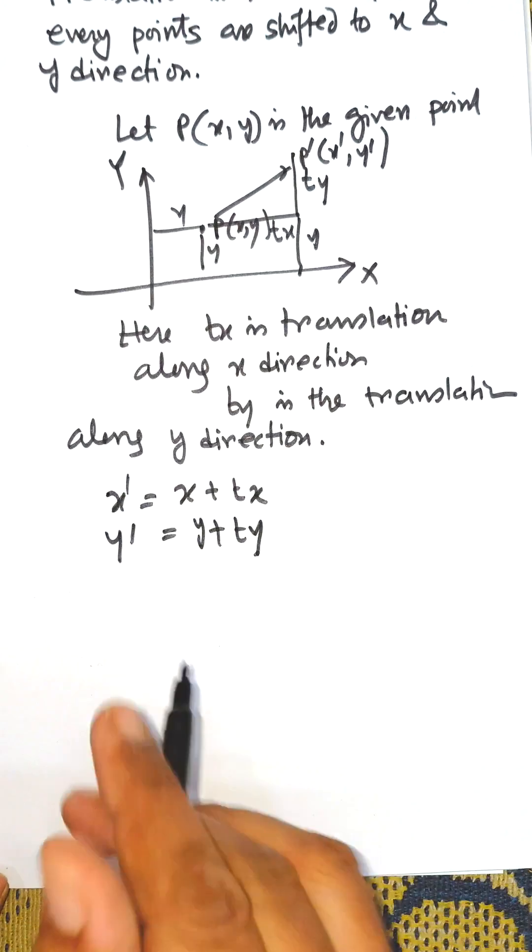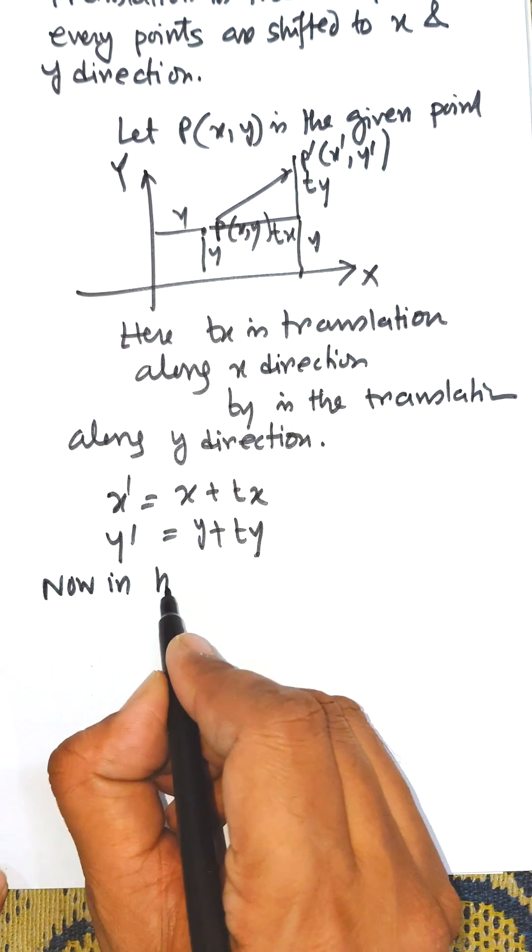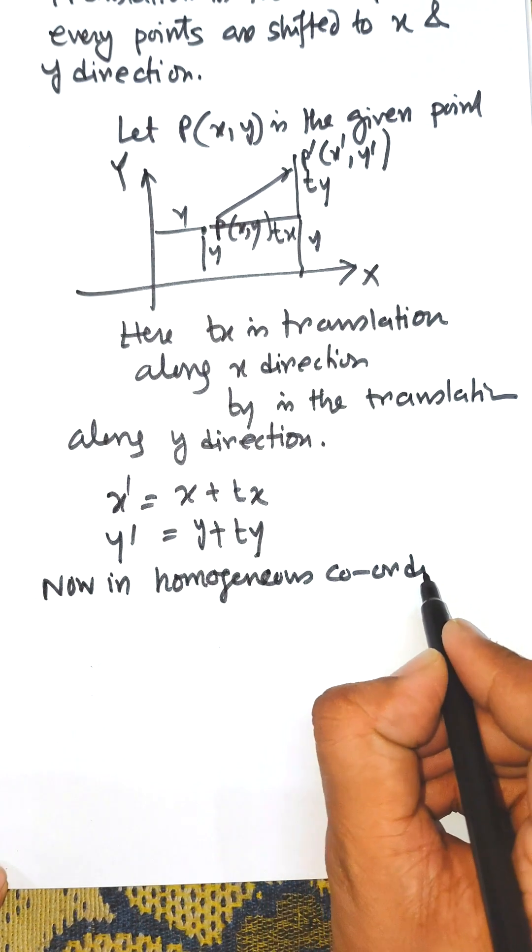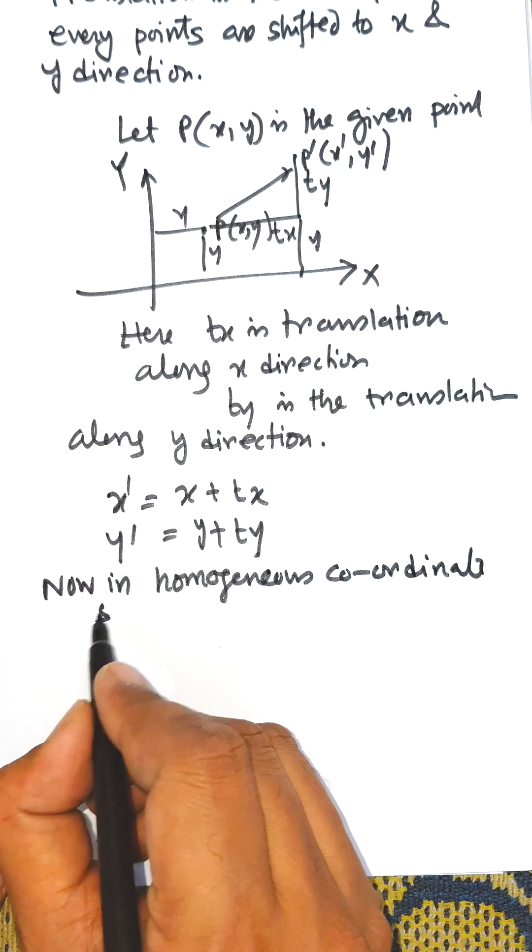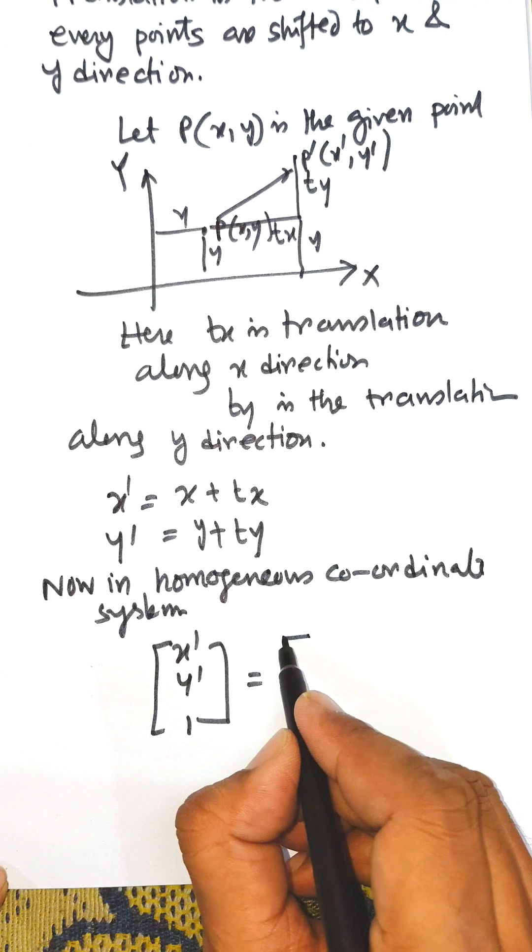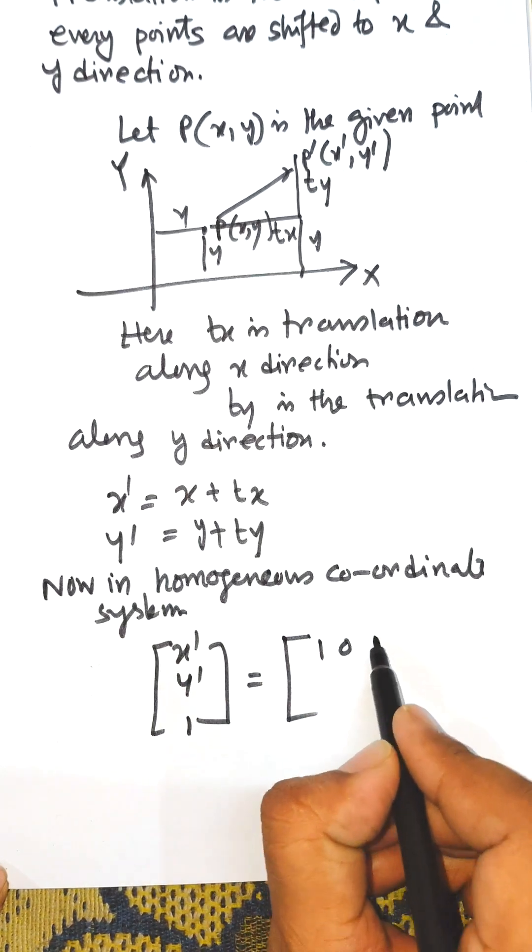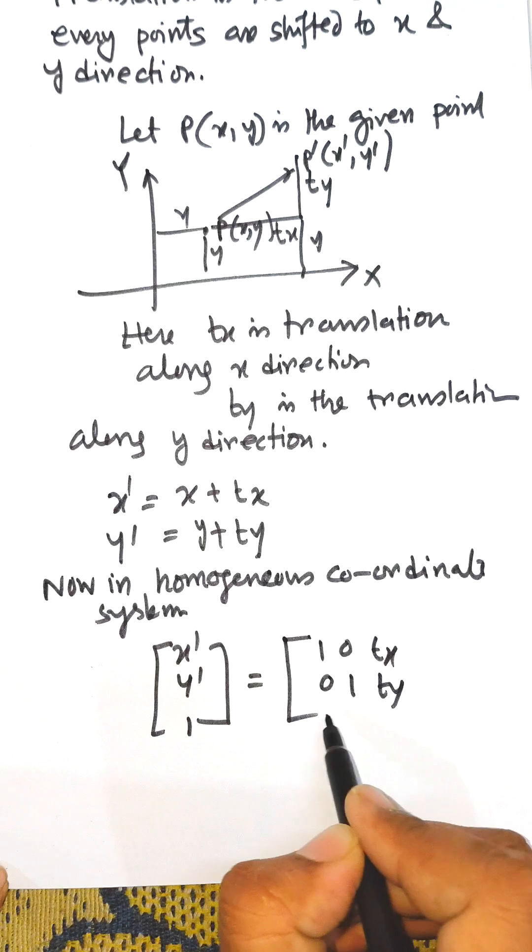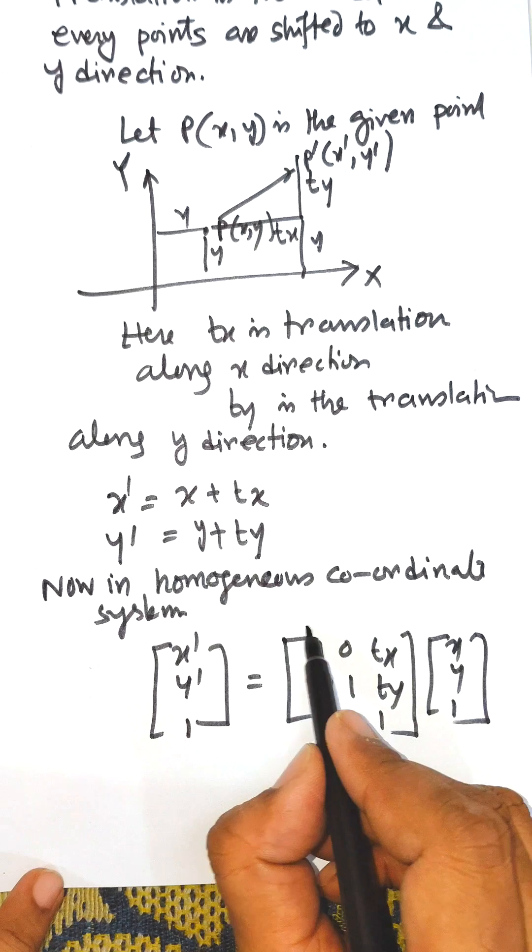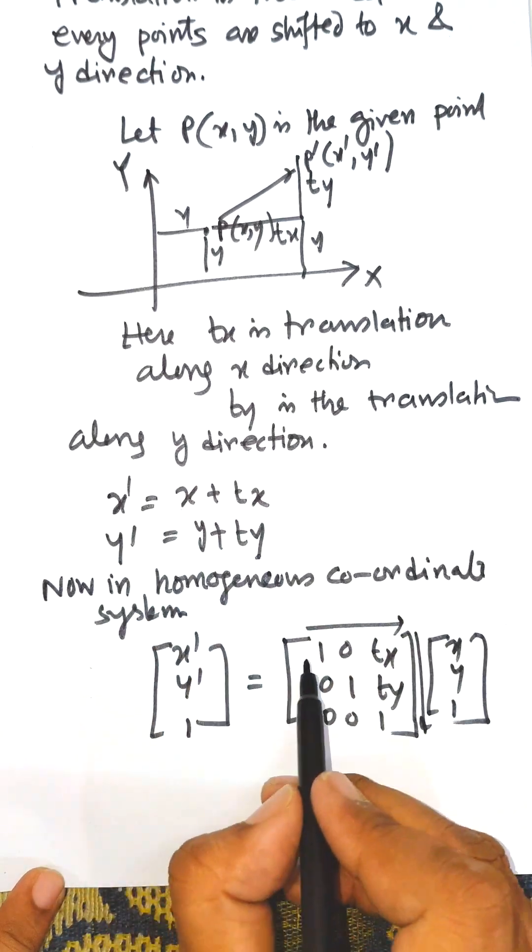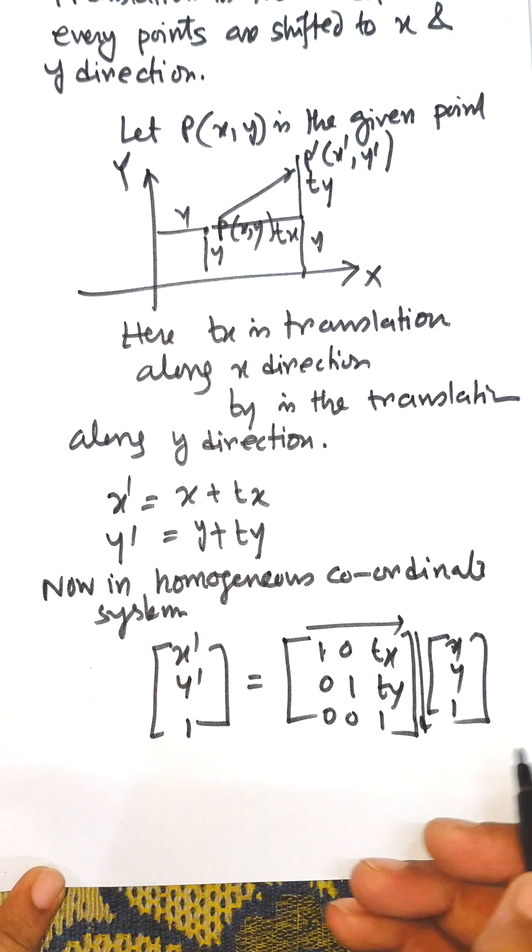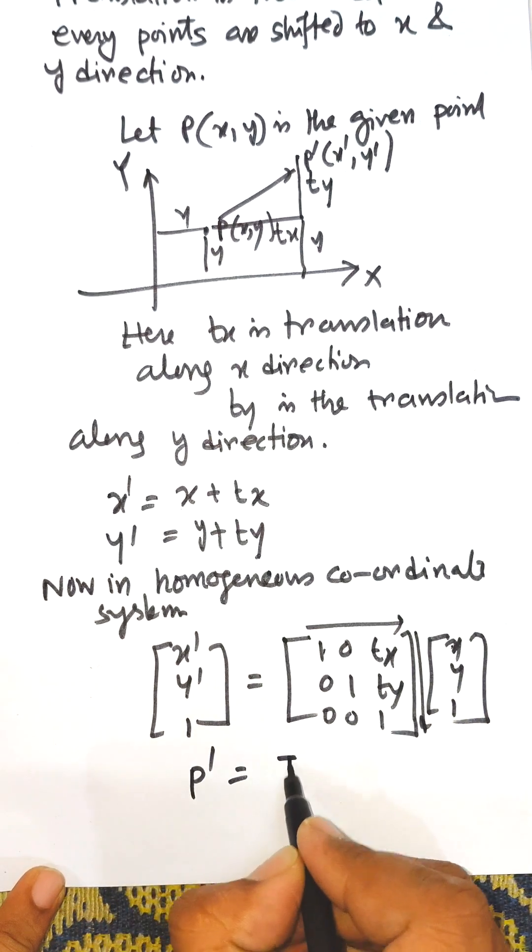Now in homogeneous coordinate system, x', y', 1 equals the matrix [1, 0, tx; 0, 1, ty; 0, 0, 1] multiplied by [x, y, 1]. If you multiply this, you will get x plus tx and y plus ty. So this is P' equals T into P.